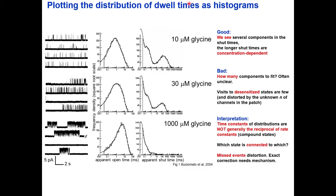However, this is not completely perfect and straightforward. How many components should I fit? It's often unclear how many open or shut times to fit. Also there is little information about desensitized states — our mechanisms will not contain desensitized states; they are pure activation mechanisms. Desensitized shuttings are long so we find very few of them, and in a good 10-minute recording patch you won't measure that many desensitized dwell times.